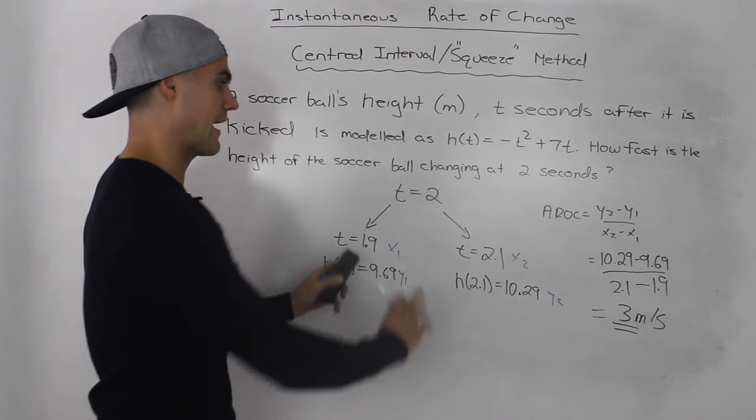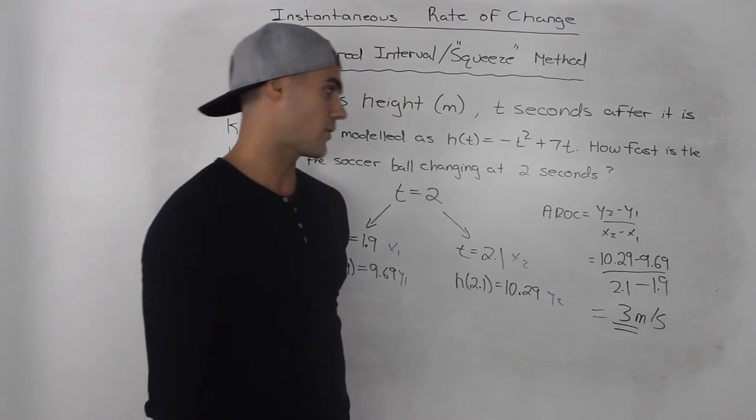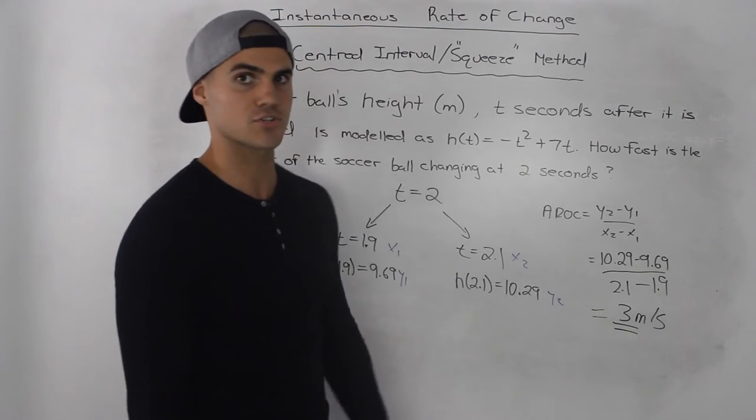Find the average rate of change between these two points. So y₂ - y₁ over x₂ - x₁. Do all the math and you get 3 meters per second.